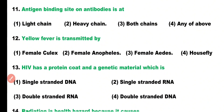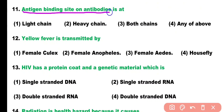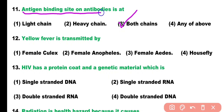Question number eleven: antigen binding site on antibodies is located at which chain? Options: light chain, heavy chain, both chains, any of the above. Correct answer is option three — the antigen binding site on antibodies is known as the paratope, which is present between the light chain as well as the heavy chain.